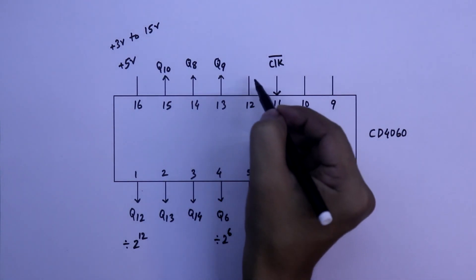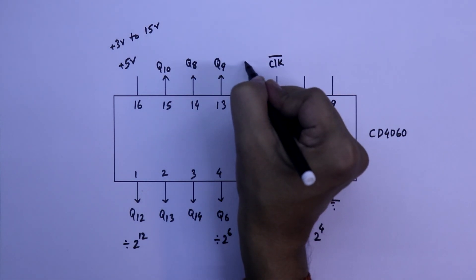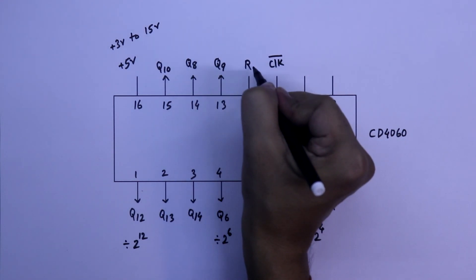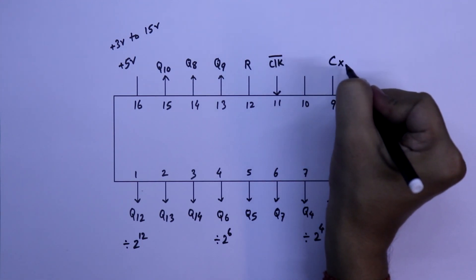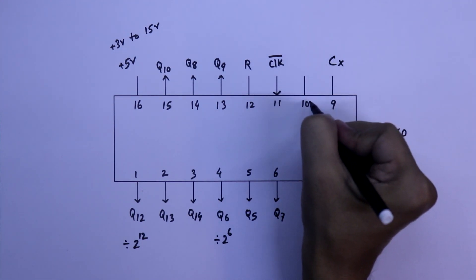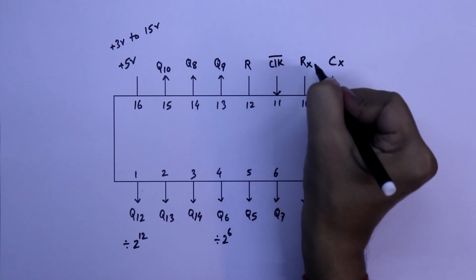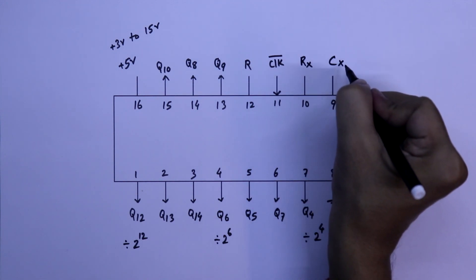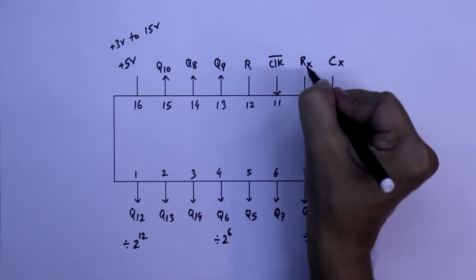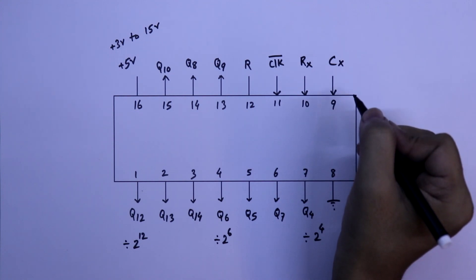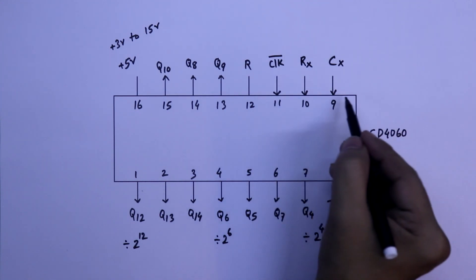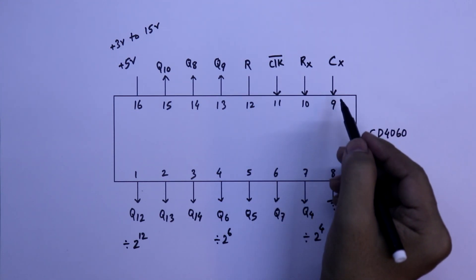Pin number 12 is reset. Pin number 9 is CX — external capacitor. And pin number 10 is RX — external resistor. So these are input pins. With these 3 pins, we can design our RC oscillator.